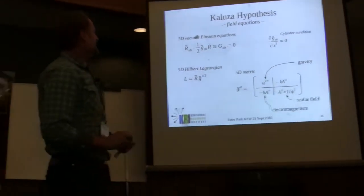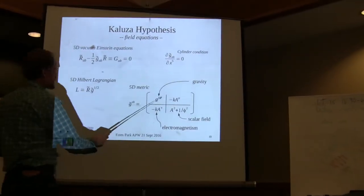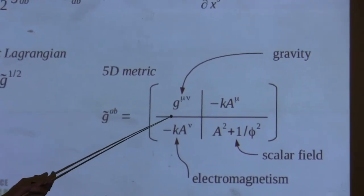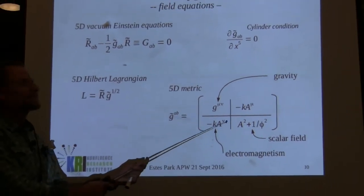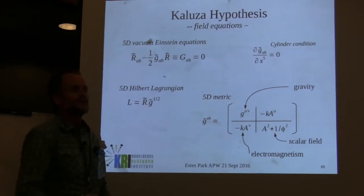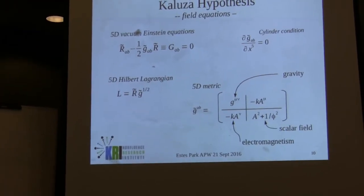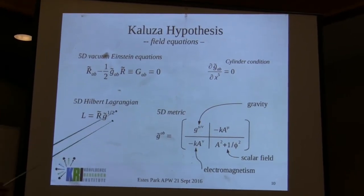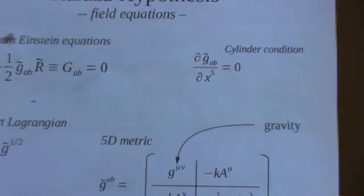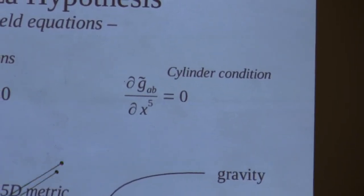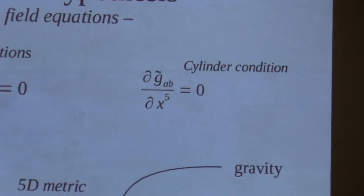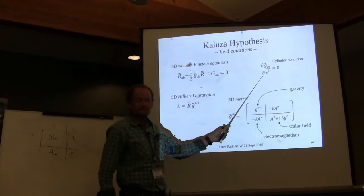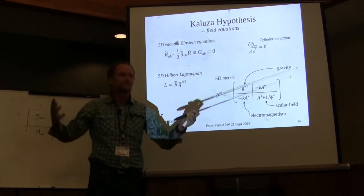K is a constant - not Boltzmann's constant. The metric is typically unitless, but the vector potential is not, so K is the constant that makes this unitless. That's the Kaluza hypothesis. Kaluza introduced the cylinder condition, which says that none of the fields depend on the fifth coordinate. This is mathematically the way of saying we don't see the fifth dimension because it never changes - it's all uniform. When Klein came along, he replaced this cylinder condition and assumed the fifth dimension is microscopic, which explains why we don't see it. This is the classical way of talking about the fifth dimension.